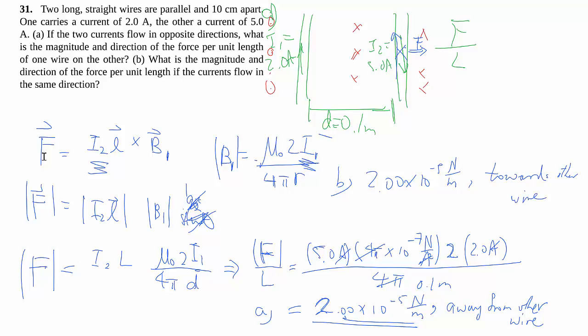Some students like to memorize whether same direction currents attract or repel, but more to the point, if you want to free up some brain space, all you have to do is use the right-hand rule a few times, following through. Take one wire, find out what magnetic field it creates at the other wire, and based on that magnetic field, you can work out the direction of the forces, all using your right-hand rules.